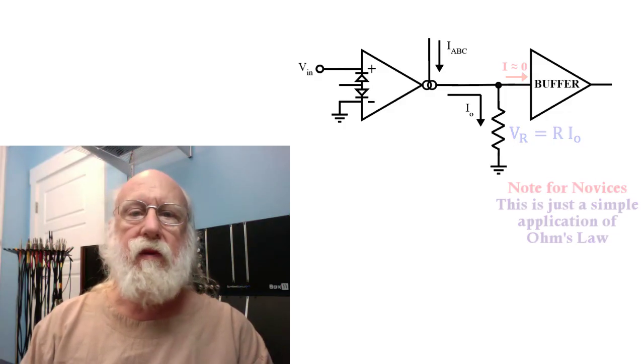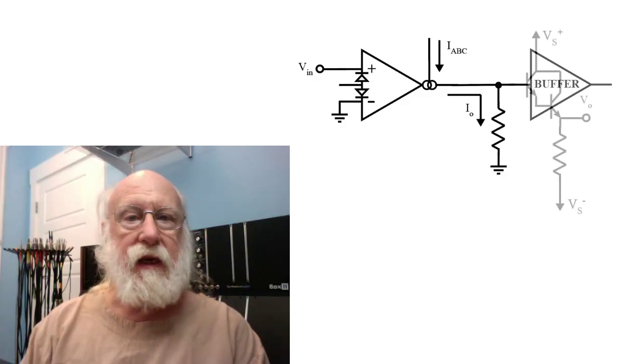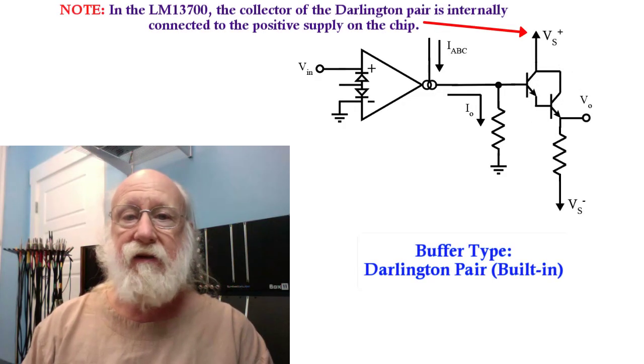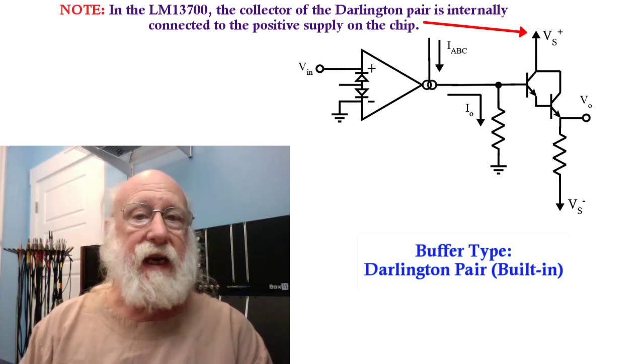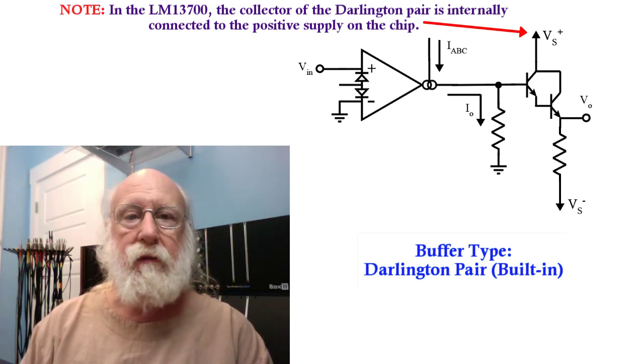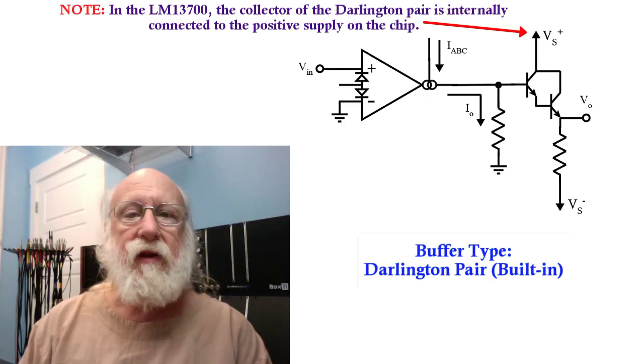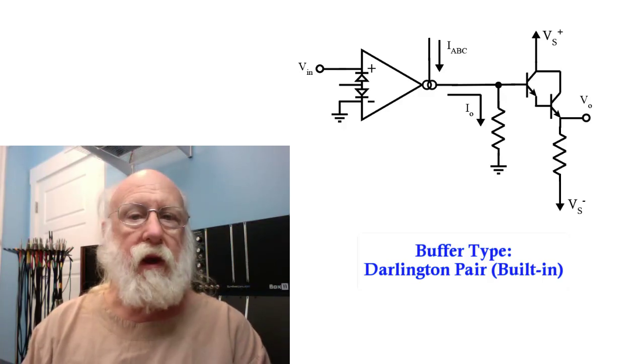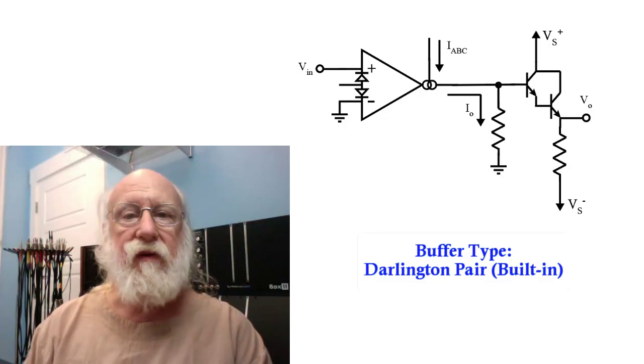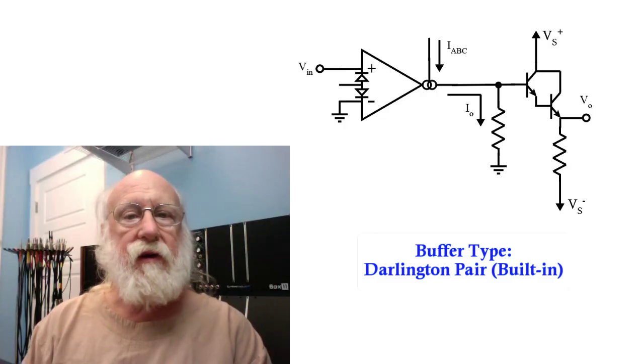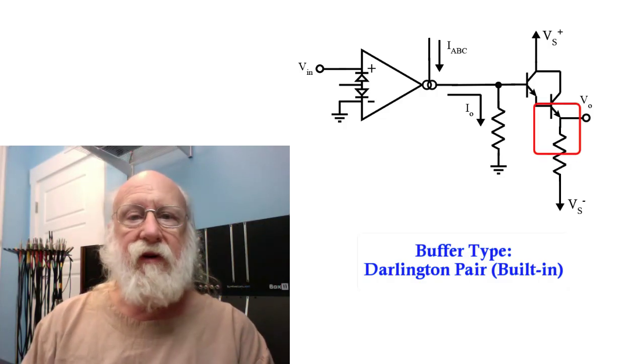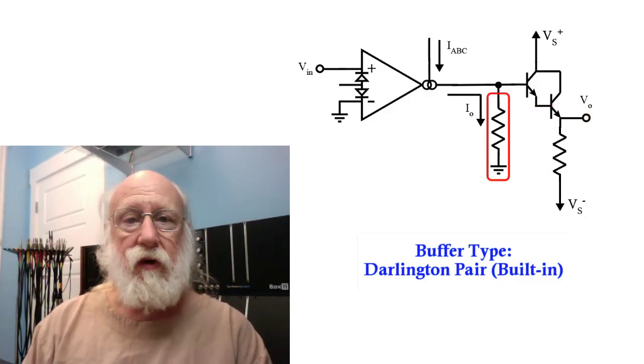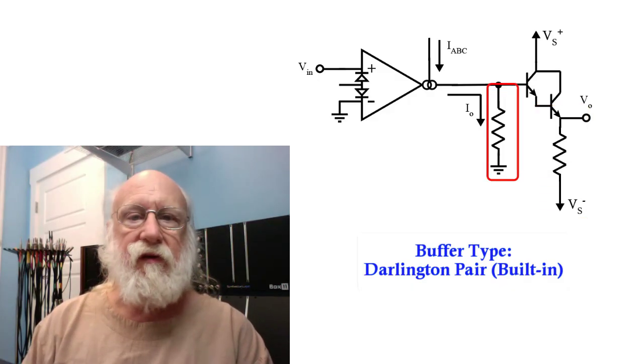The first buffer we will consider is the built-in Darlington pair on the LM13700. Other OTAs may not have this built-in buffer capability, but the 13700 does. You configure the Darlington pair as an emitter follower. You connect the emitter to the negative supply voltage through a resistor, and you connect your resistor, which is doing the current voltage conversion, to the base.